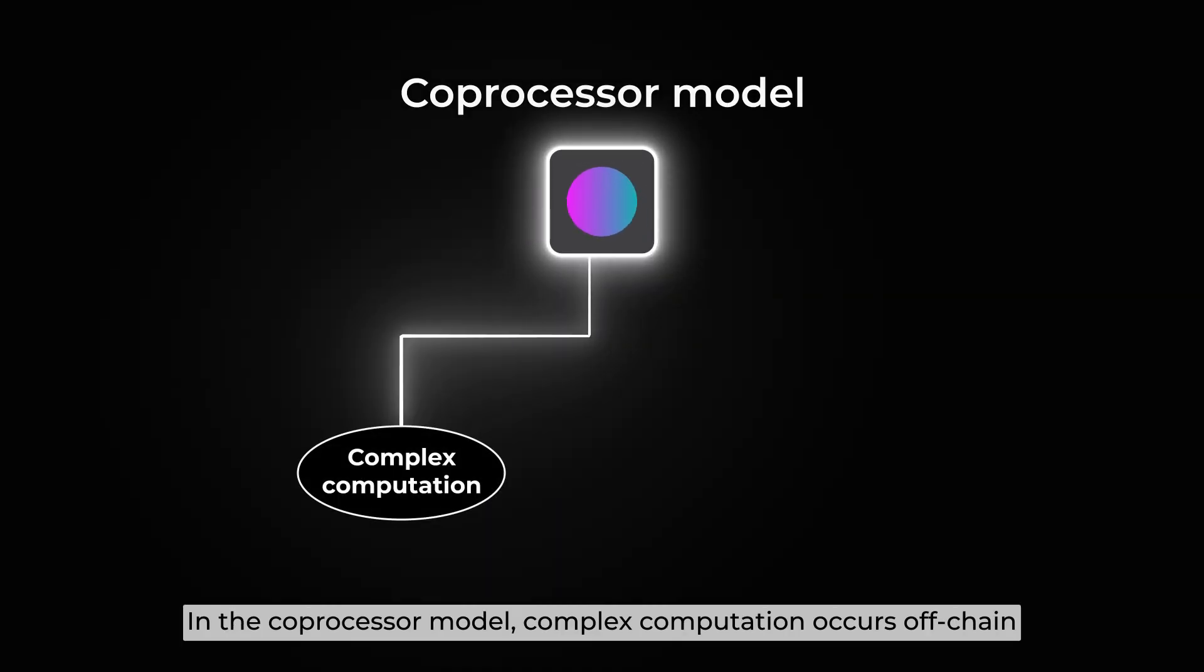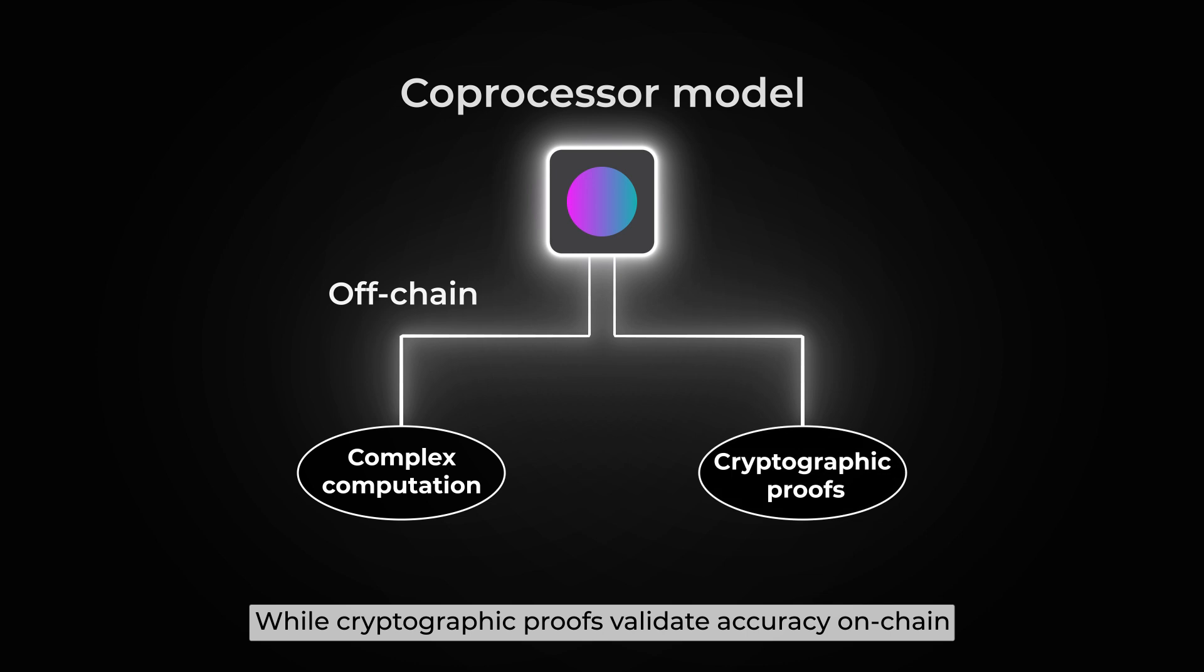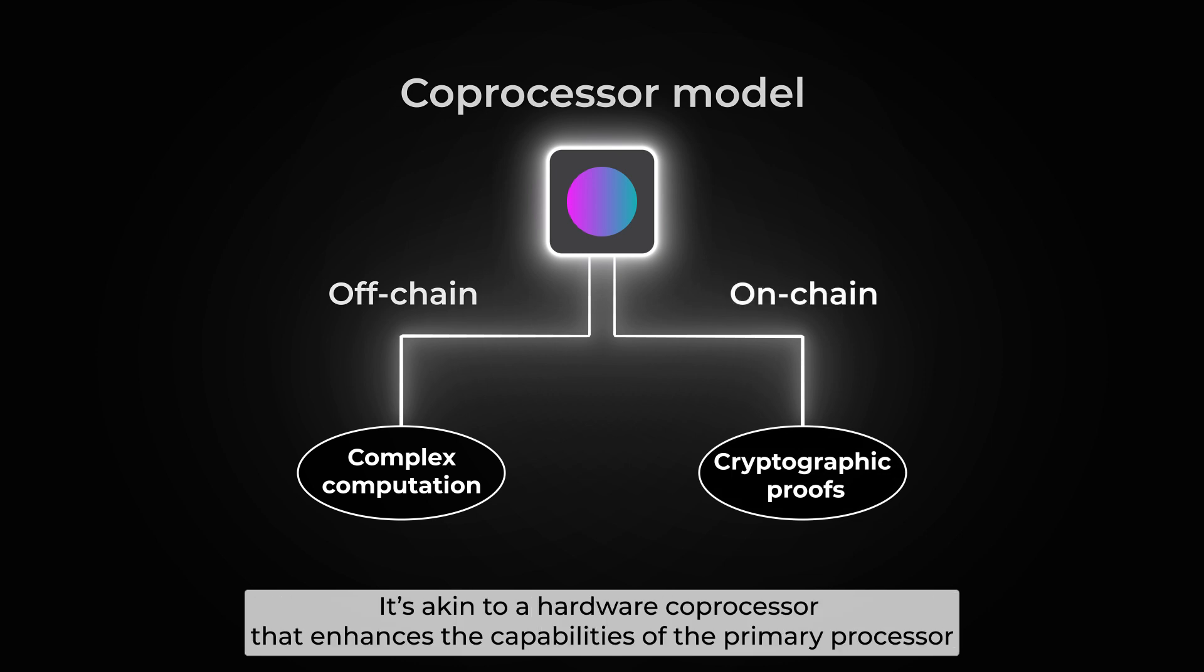In the coprocessor model, complex computation occurs off-chain, while cryptographic proofs validate accuracy on-chain. It's akin to a hardware coprocessor that enhances the capability of the primary processor.